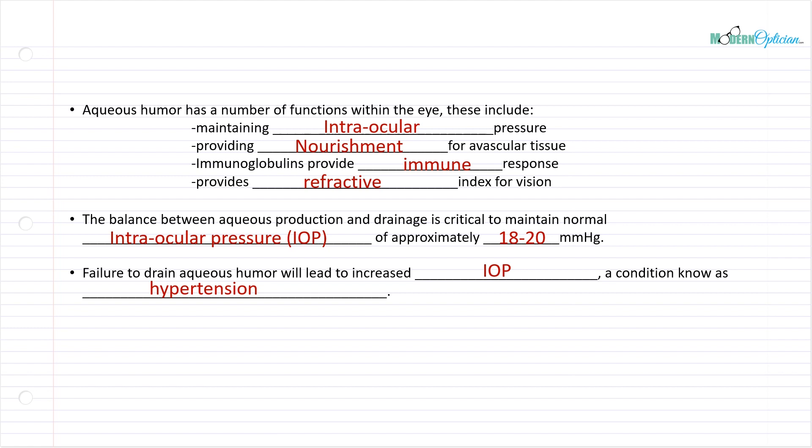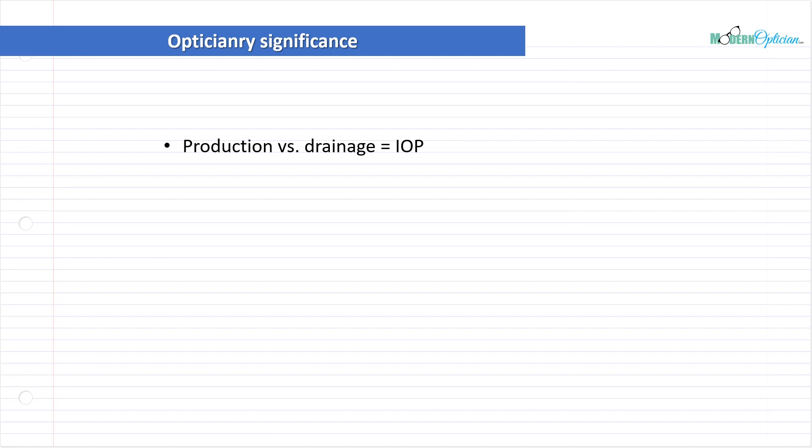So why is this important to us? We talked about production versus drainage equals IOP. You need to understand that. You need to know that if a person has low or high intraocular pressure, there's a pretty good chance that it's due to this whole pathway we just talked about. Something's going wrong somewhere. High IOP equals ocular hypertension equals risk of glaucoma.